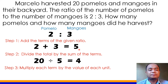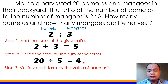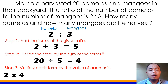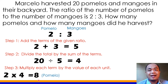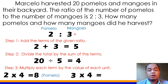Now we're on the third step: multiply each term by the value of each unit. Yung mga term natin ay 2 at 3. I-multiply natin ang bawat term sa 4. For pumelo: 2 times 4 equals 8. So ang number of pumelos sa 20 prutas na na-harvest ni Marcelo ay 8. For mangoes: 3 times 4 equals 12. So 12 mangoes ang na-harvest ni Marcelo.